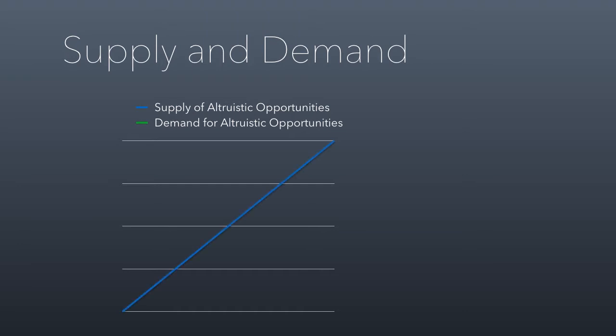We're going to discuss whether the supply curve truly is upward sloping. If you're a supplier of altruistic opportunities, this means each extra opportunity you provide is going to be more expensive than the last. Think about whether this is true — if I feed 100 kids with my non-profit, does feeding the 101st kid cost more? If so, that means we have an upward sloping supply curve. On the other side, we have the demand curve downward sloping, meaning the cheaper altruistic opportunities become, the more people will buy them.